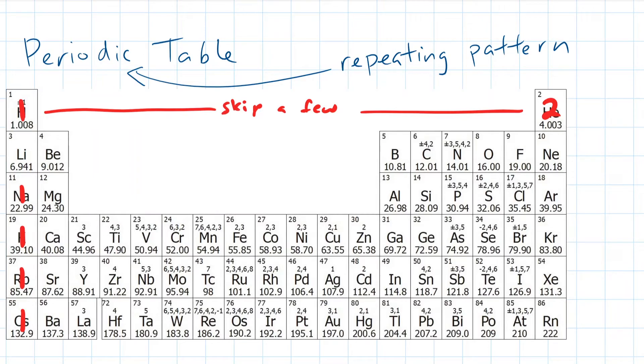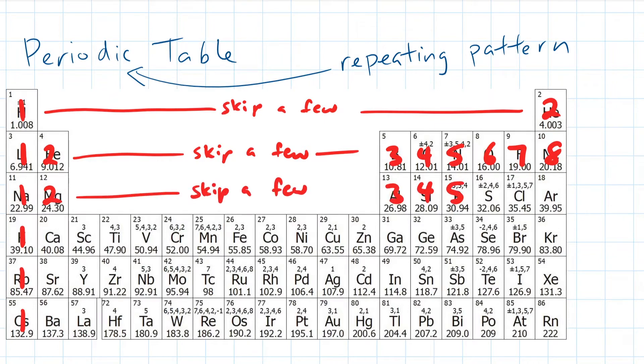Lithium resets to one valence electron. Beryllium will have two, skip a few, boron will have three, carbon four, and so forth. The second period concludes with eight valence electrons. On the third period, sodium resets to one, magnesium two, skip a few blank spaces, three for aluminum, and I think you get the picture.